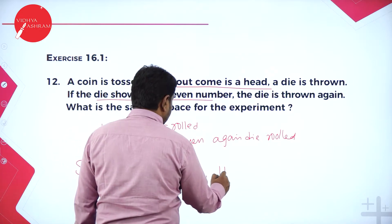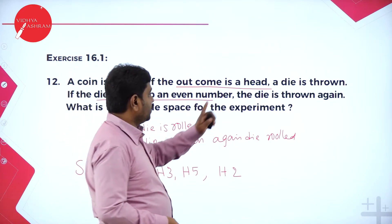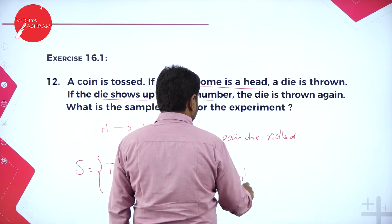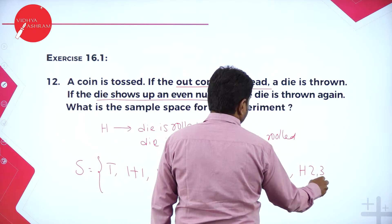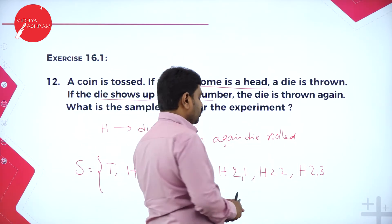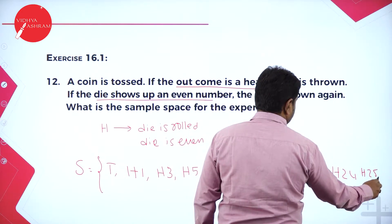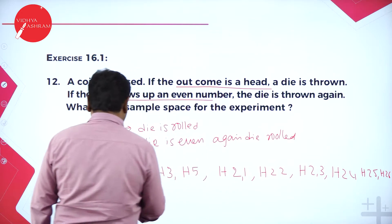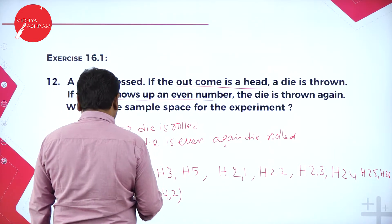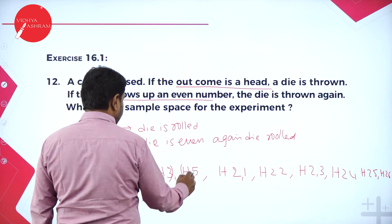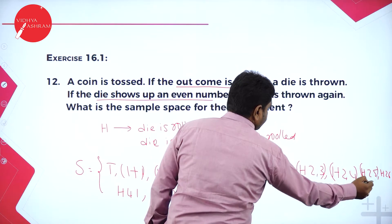Suppose I get a head and I rolled a die and got an even number. When you get an even number, again you should repeat the experiment — die is thrown again. So outcomes: H21, H22, H23, H24, H25, H26. With die showing 4 (also even), again roll: H41, H42, and similar. With 6 (also even), again roll: H61, H62, H63, H64, H65, H66.